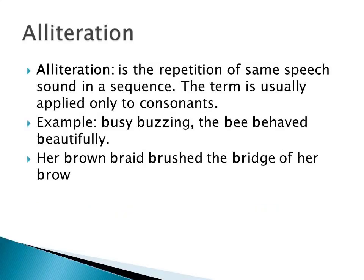Alliteration is the repetition of speech sound in a sequence. The term is usually applied only to consonants. Examples: 'Her brown braid brushed the bridge of her brow' and 'busy buzzing the bee behaved beautifully.' So the repetition of speech sound 'b' is alliteration.